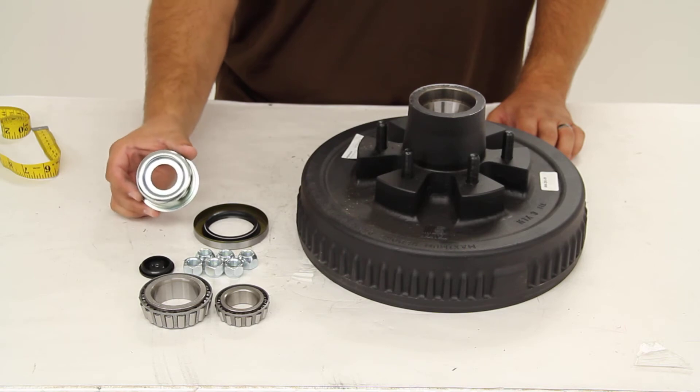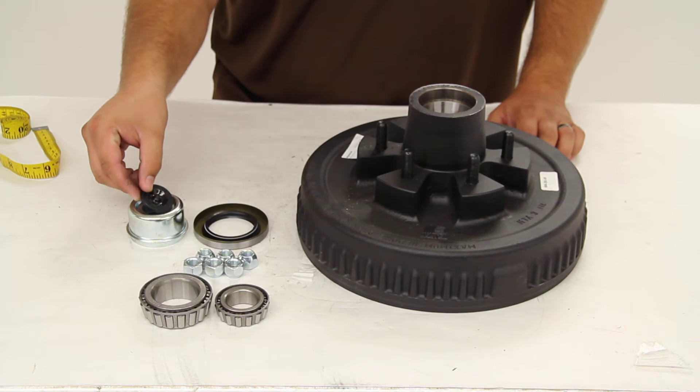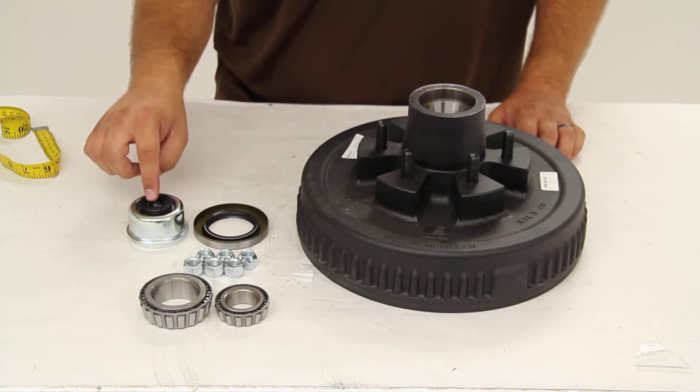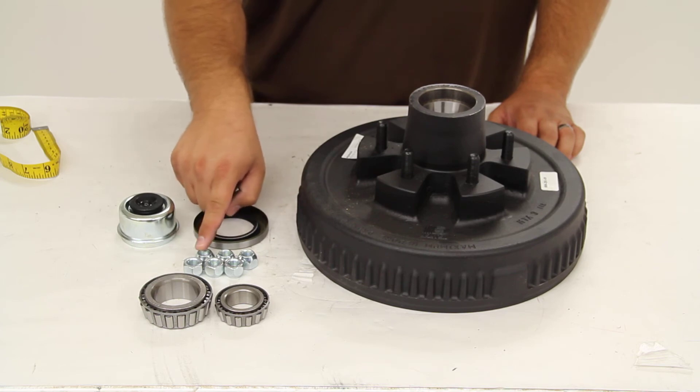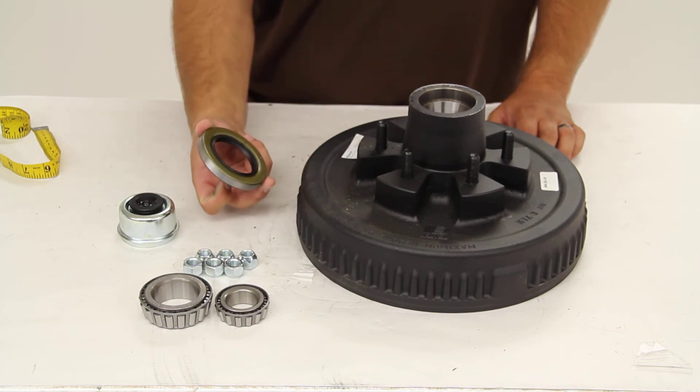You have a grease cap with a 2.44 inch outer diameter and a removable rubber plug so that you can access the grease zerk on your EZ-Lube spindle. There's also six conical lug nuts for securing the wheel to the drum and your grease seal.